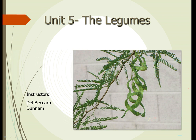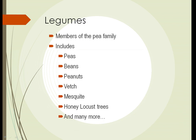The Legumes, Unit 5. Legumes are members of the pea family and include peas, beans, peanuts, vetch, mesquite, honey locust trees, and many, many more plants.